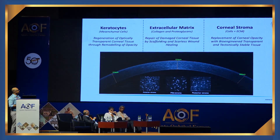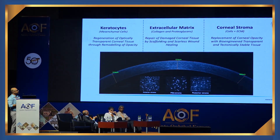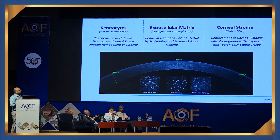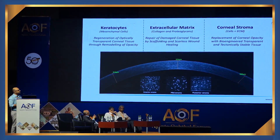The keratocytes in the corneal stroma are mesenchymal in origin. Together with the extracellular matrix — made of collagen and proteoglycans — they constitute the stroma, which consists of very sparse keratocytes and mesenchymal cells within the extracellular matrix. If you are thinking of replacing the corneal stroma, you have to create this equivalent, and that is essentially what we are trying to do.